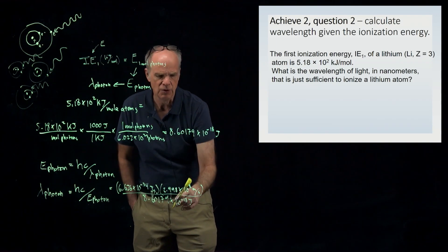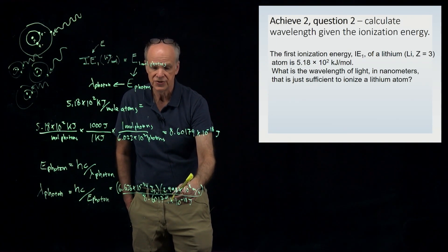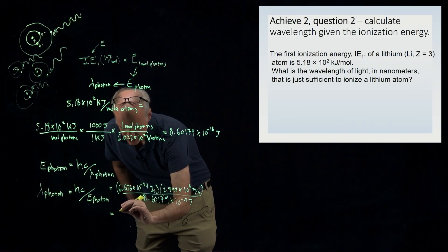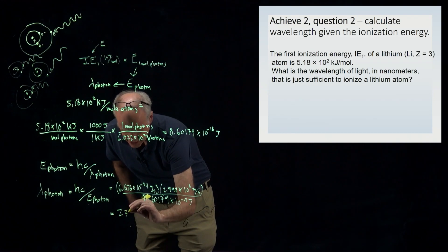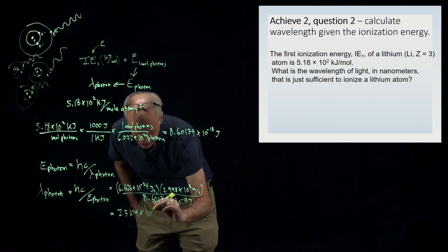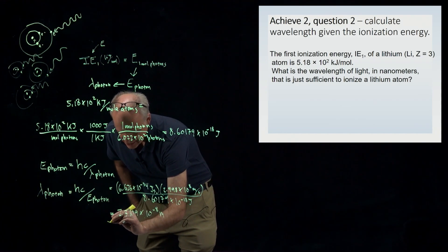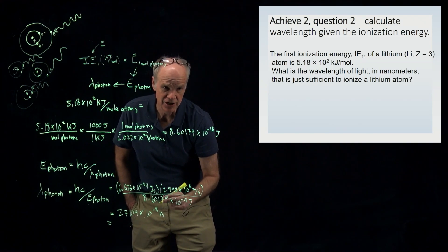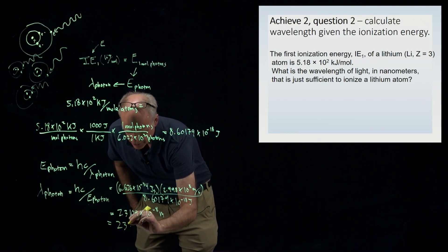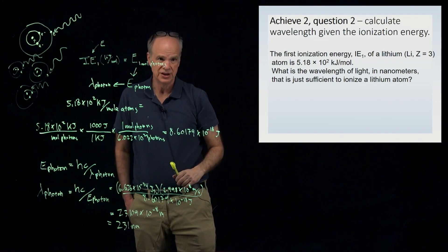The result in meters is 2.3109 × 10⁻⁸ meters. Converting to nanometers and rounding to three significant figures gives the final answer: 231 nanometers. Thank you for listening — we'll see you next time.